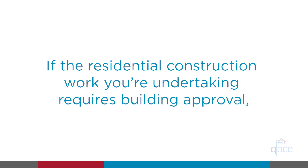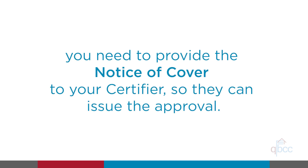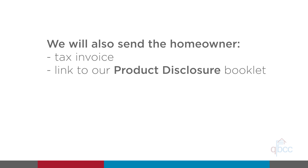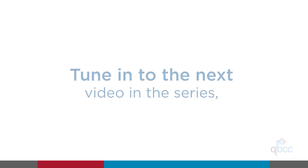If the residential construction work you are undertaking requires building approval, you'll need to provide the notice of cover to your certifier so they can issue the approval and approved plans. You'll also send the homeowner a tax invoice, a link to the product disclosure booklet, and a link to instructions for how to pay for optional additional cover should they wish to do so.